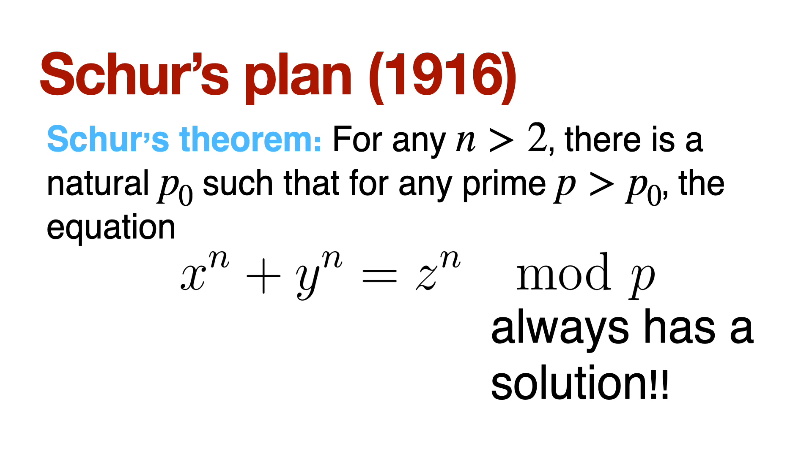But Schur's theorem is saying except finitely many primes, all the primes, for all the primes, this equation has a solution. So the strategy of going modulo something to prove there is no solution is just utterly failing here. Okay, so this video is about proving this theorem. But the heart of the video is to prove a lemma due to Schur, which uses combinatorics.